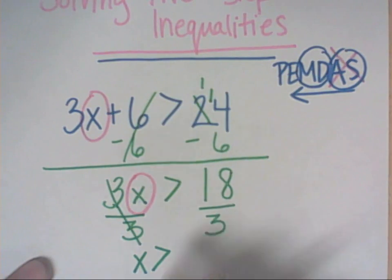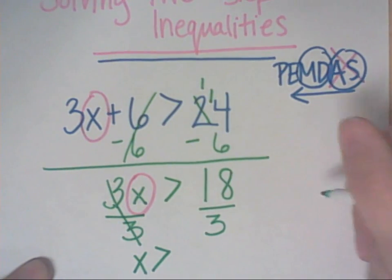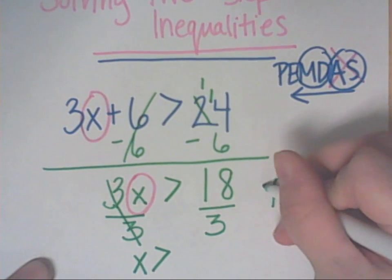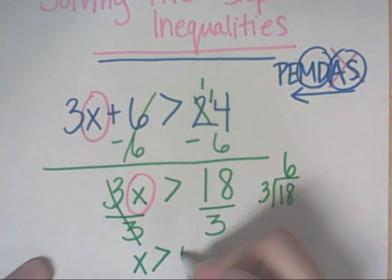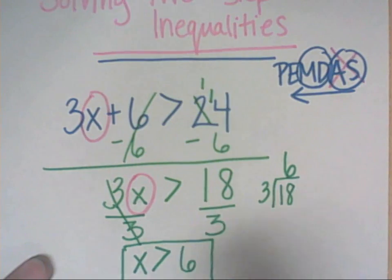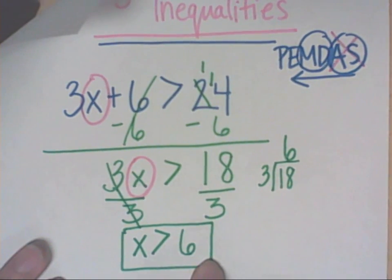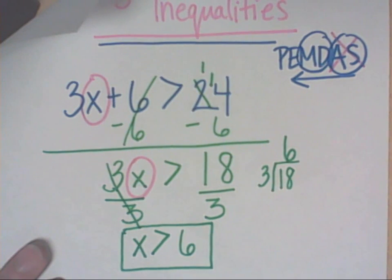That fraction bar line tells us to divide. So 18 divided by 3, if we need to say it this way, numerator in, denominator out. 3 will go into 18 six times. So our answer is X is greater than 6. And we could graph that on a number line if we needed to. Good job. Thank you.